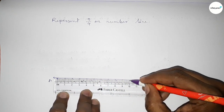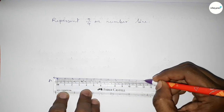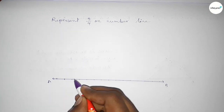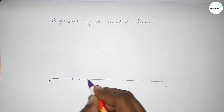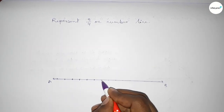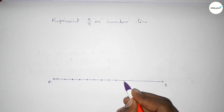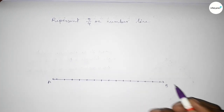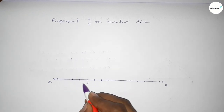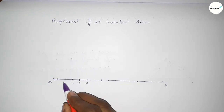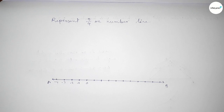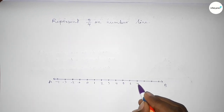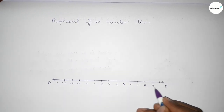Marking the numbers on the line using a scale, again marking the numbers with deep color to understand perfectly. Taking the starting number zero, then minus one, minus two, minus three, minus four, and on the other side one, two, three, four, five, six, seven, eight, nine, ten.